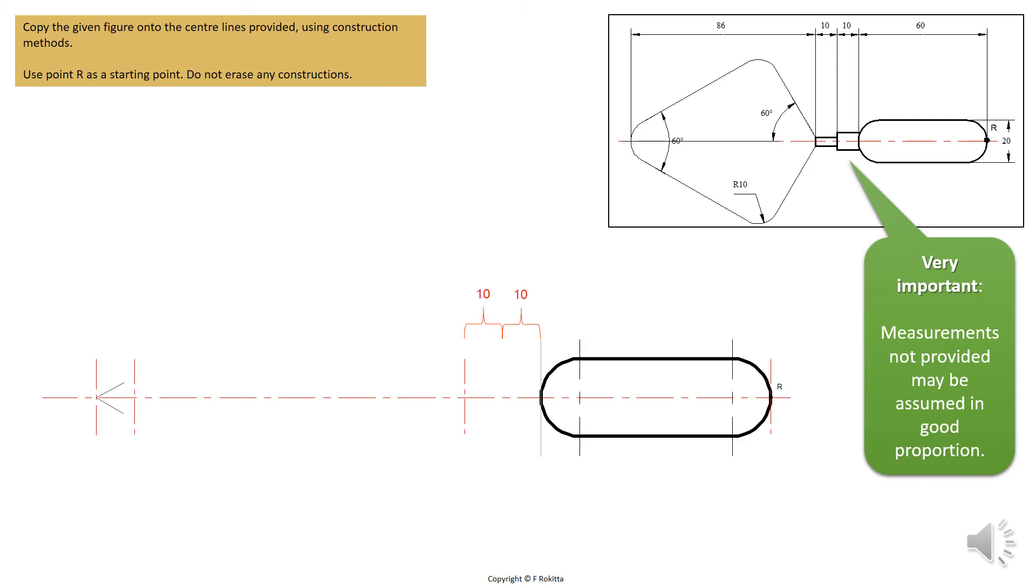With the next step we will measure the first 10 mm starting from the end of the handle. This will represent the length of the copper ring. The next 10 mm will represent the length of the metal pin. No diameter has been provided, therefore we can use a good proportion.